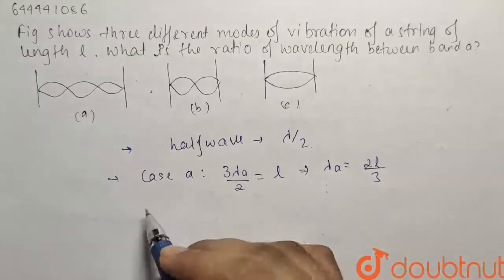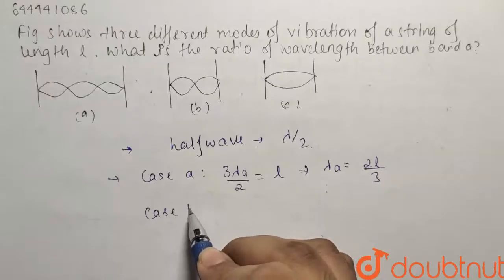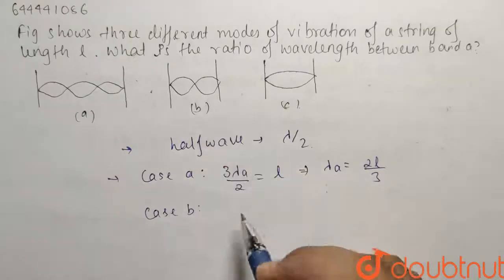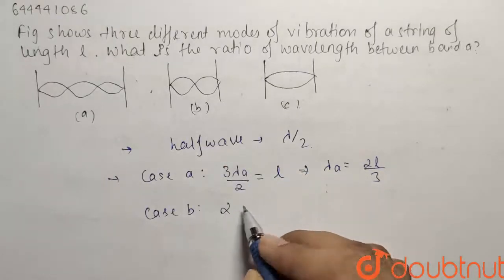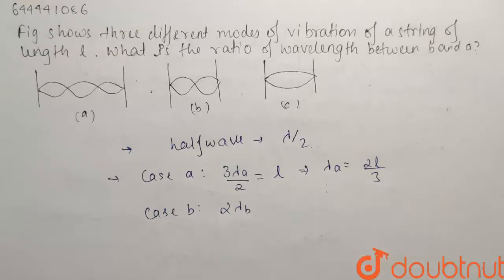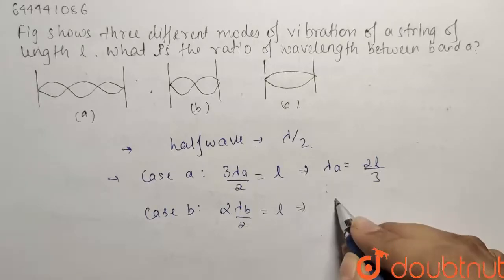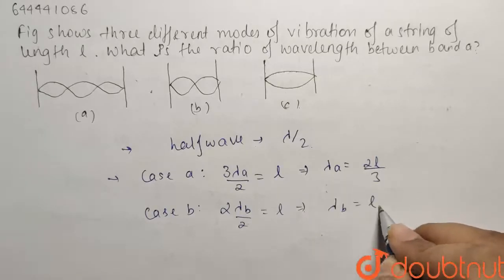And similarly, if I have a look at the case B, what I get is there are two half waves. So two times lambda B by 2 will be equals to the length L. So from here lambda B comes out as L itself.